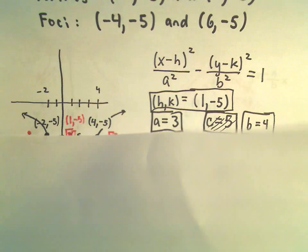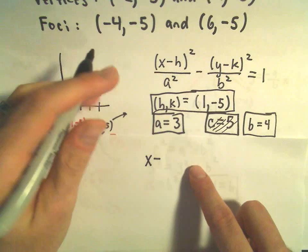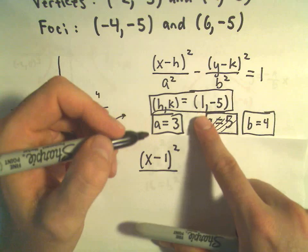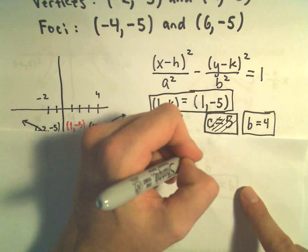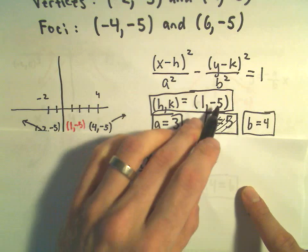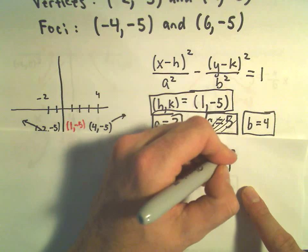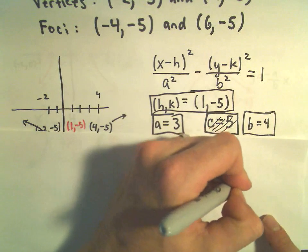So, to me, when we fill in this formula, it says we're going to have (x-1)²/a², which will be 3², minus, we'll take y minus k, but our k is negative 5, so we'll get (y+5)²/b² equals 1.